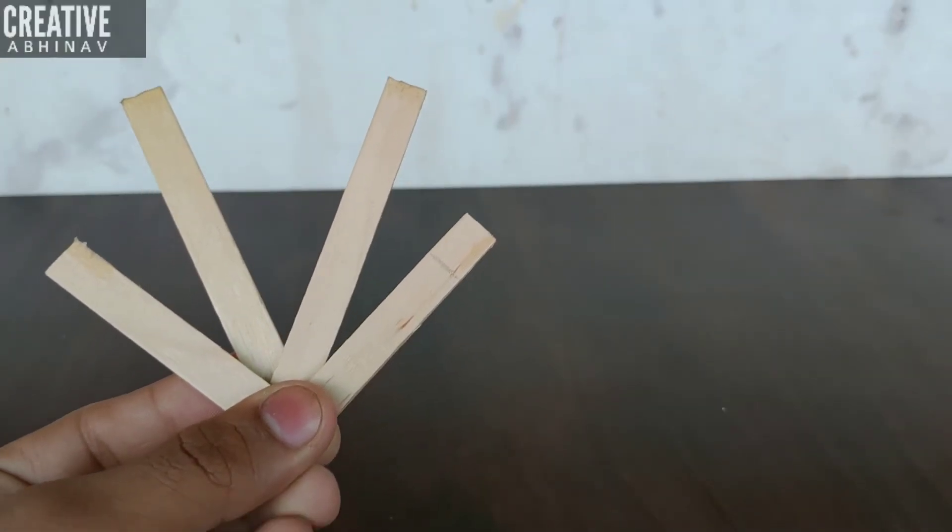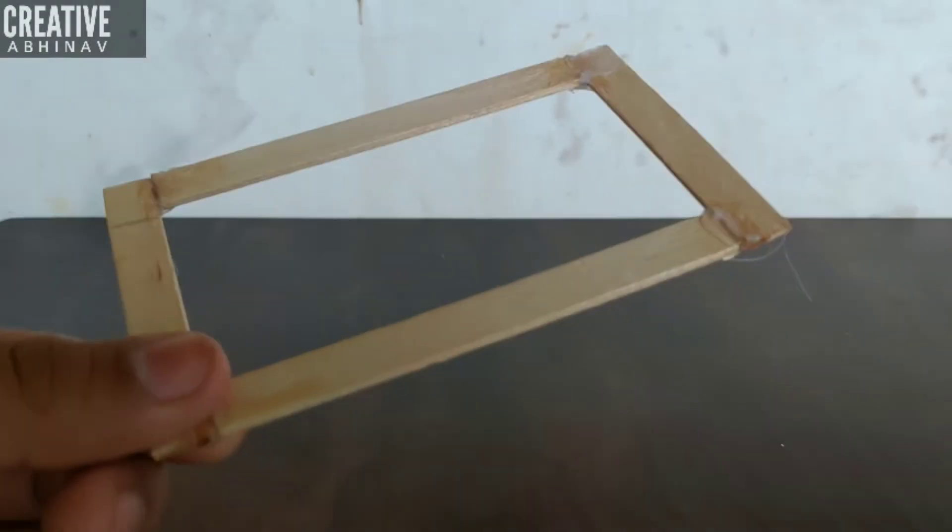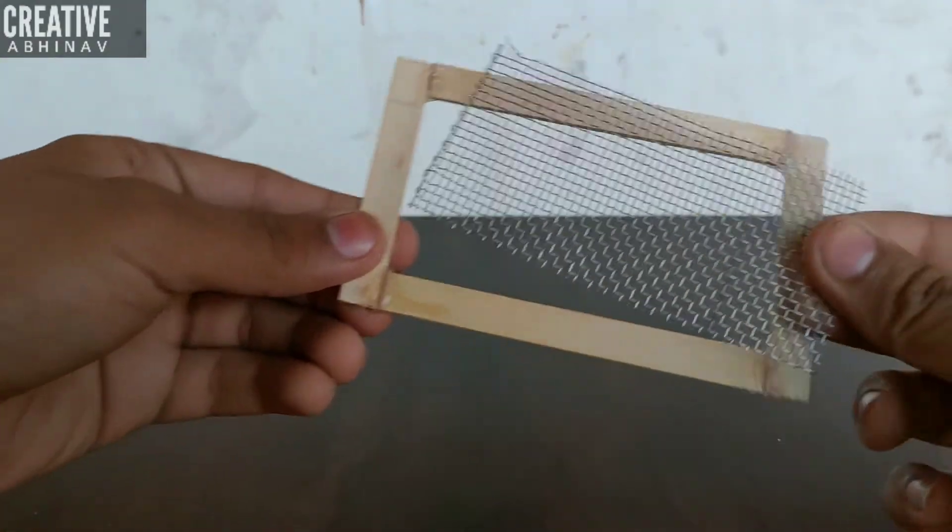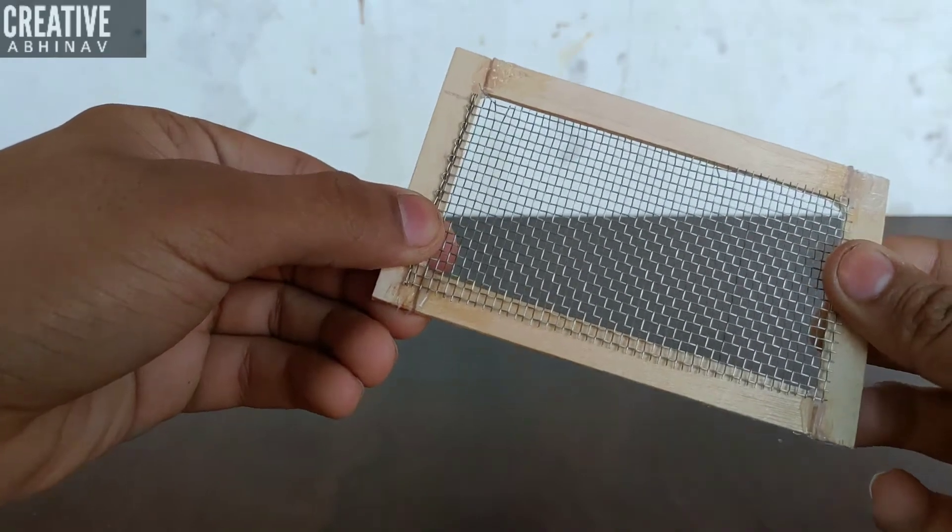Now take some ice cream stick pieces, then we have to make a frame from it. Then we have to paste this metal grill on our ice cream stick frame.